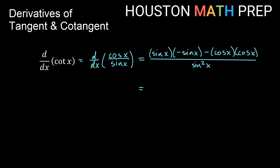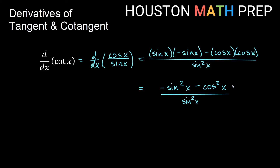And then we have all of that over the square of what lies below — sine squared x on the bottom. So sine x times negative sine x gives us negative sine squared x, minus cosine x times cosine x, which is cosine squared x, all over sine squared x. Now if we factor out a negative 1, we have negative 1 times the quantity sine squared x plus cosine squared x, all over sine squared x.